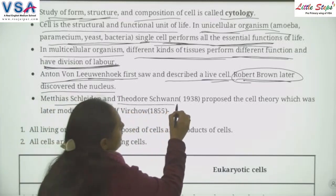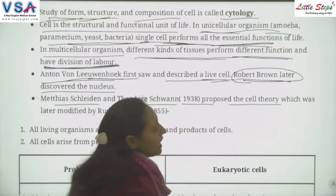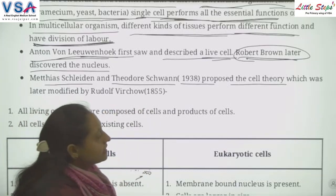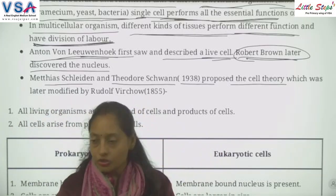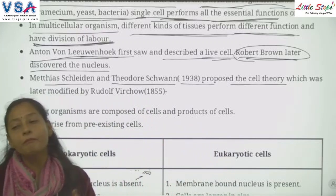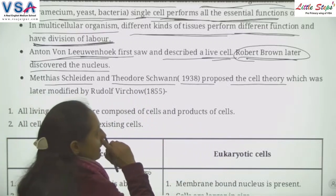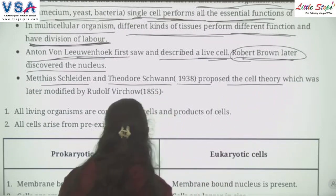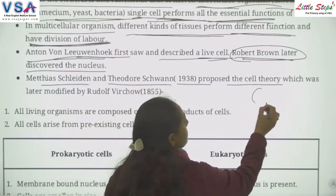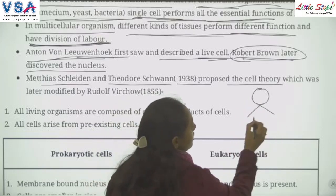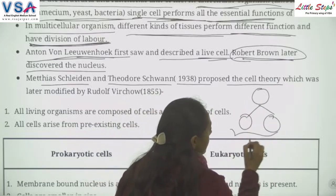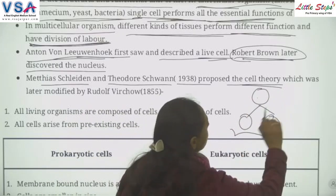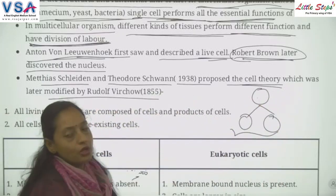Schleiden and Schwann in 1838 proposed the cell theory. According to cell theory, new cells arise from pre-existing cells. For example, when a parent cell divides, two daughter cells develop from the pre-existing cell. This cell theory was later modified by Rudolf Virchow.